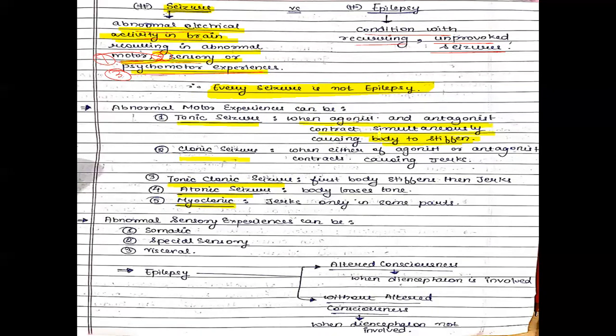If either antagonists or agonists contract at a time, what happens? The body will have jerks. What will we call that? Clonic. So when either of agonists or antagonists contracts, that would be called jerks or a clonic seizure.